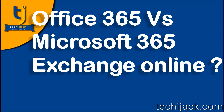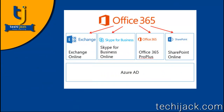Before starting the journey of Exchange Online in Office 365, it is good to understand the overview of what is Office 365, Microsoft 365, and Azure AD. Office 365 offers Software as a Service, and the major services in Office 365 are Exchange Online, Skype for Business, SharePoint, and Office 365 ProPlus. Some other services included are Yammer, OneDrive, Teams, Planner, and some other robust productivity and security features.